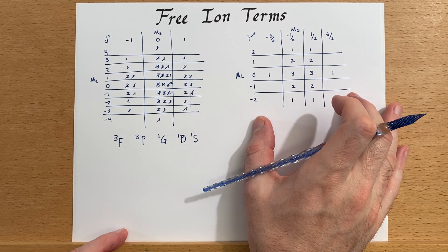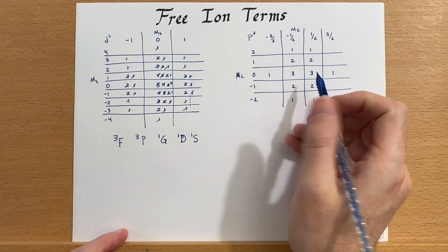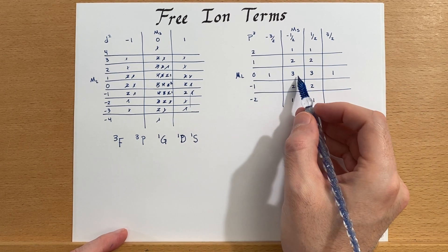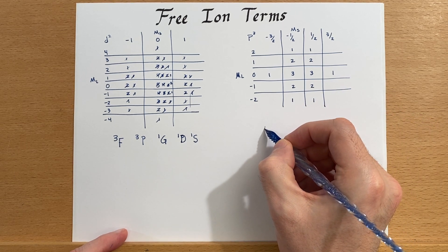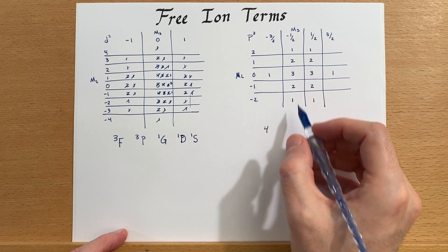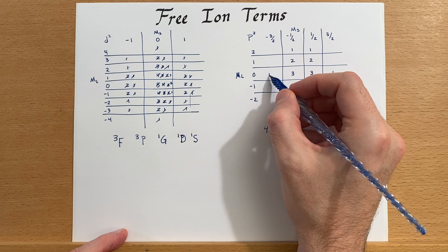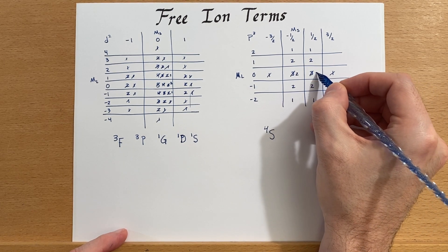Okay. Let's look at the P3 free ion terms. This is a little simpler. First, the widest one is four wide, one, two, three, four. So that is a quartet. And it is one tall, so S. So these are now gone and that's reduced down to two.